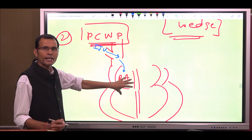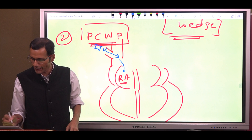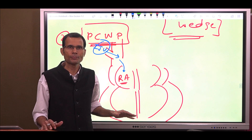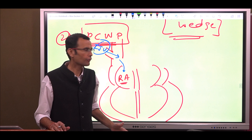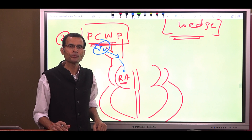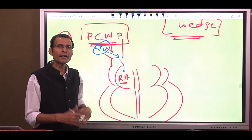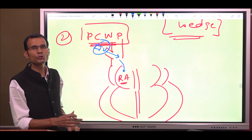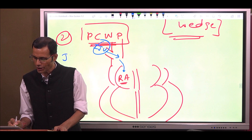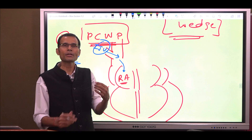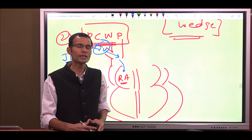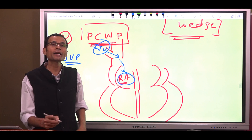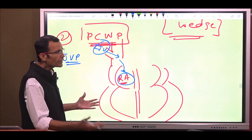From the right atrium up to the internal jugular vein, along the entire course, there are no valves. Since there are no valves, there is no pressure drop from the right atrium up to the internal jugular vein. Therefore, the pressure in the right atrium gets reflected as-is over the internal jugular vein. So if we are measuring the JVP — jugular venous pressure — that tells you the story of the right atrial pressure.